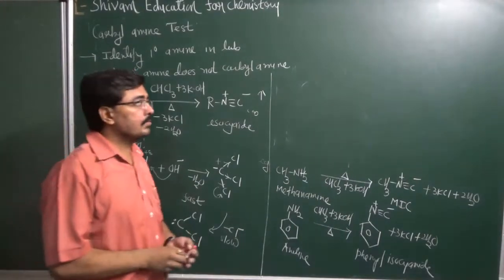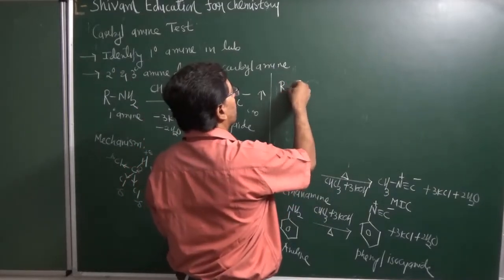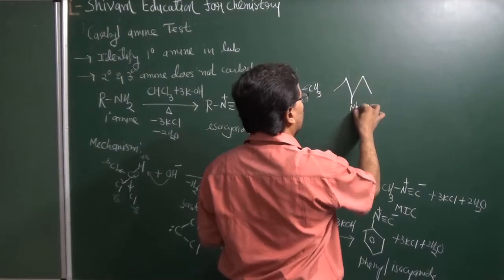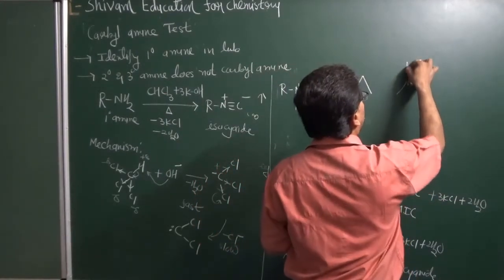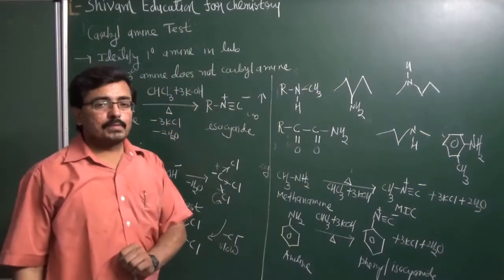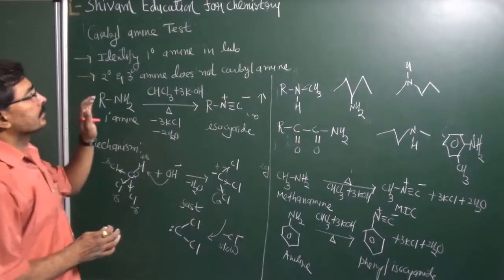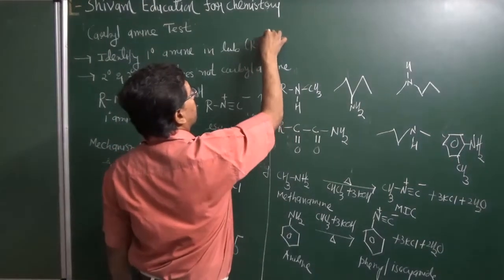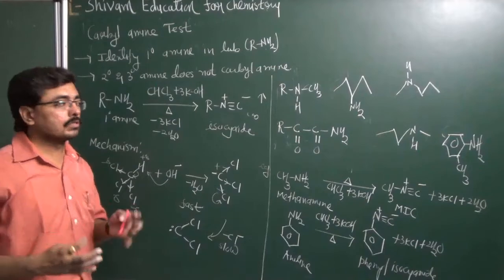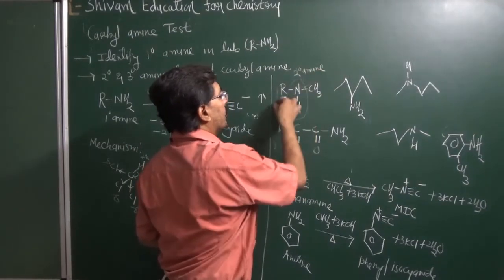Now in various competitive exams, you will be given various amine structures and you need to identify which amine will not give the Carbylamine Test. You just have to identify which amine gives the Carbylamine Test and which does not. You should know that if it is a primary amine, it will give the Carbylamine Test. If you identify an amine as secondary, it will not give the Carbylamine Test.